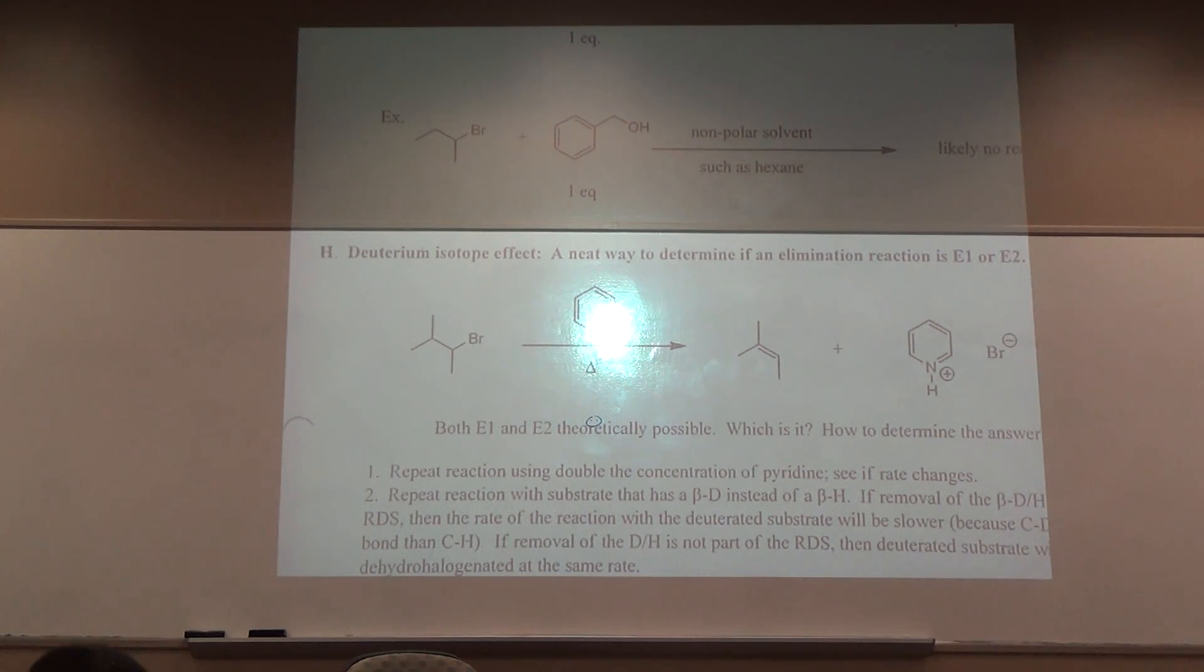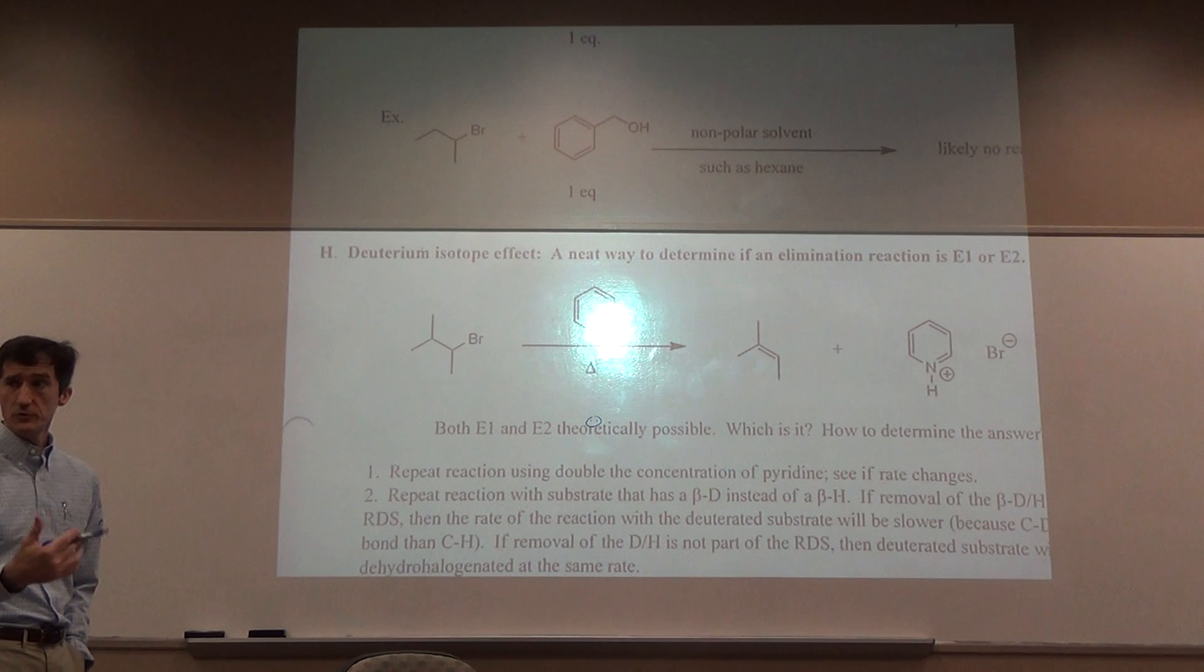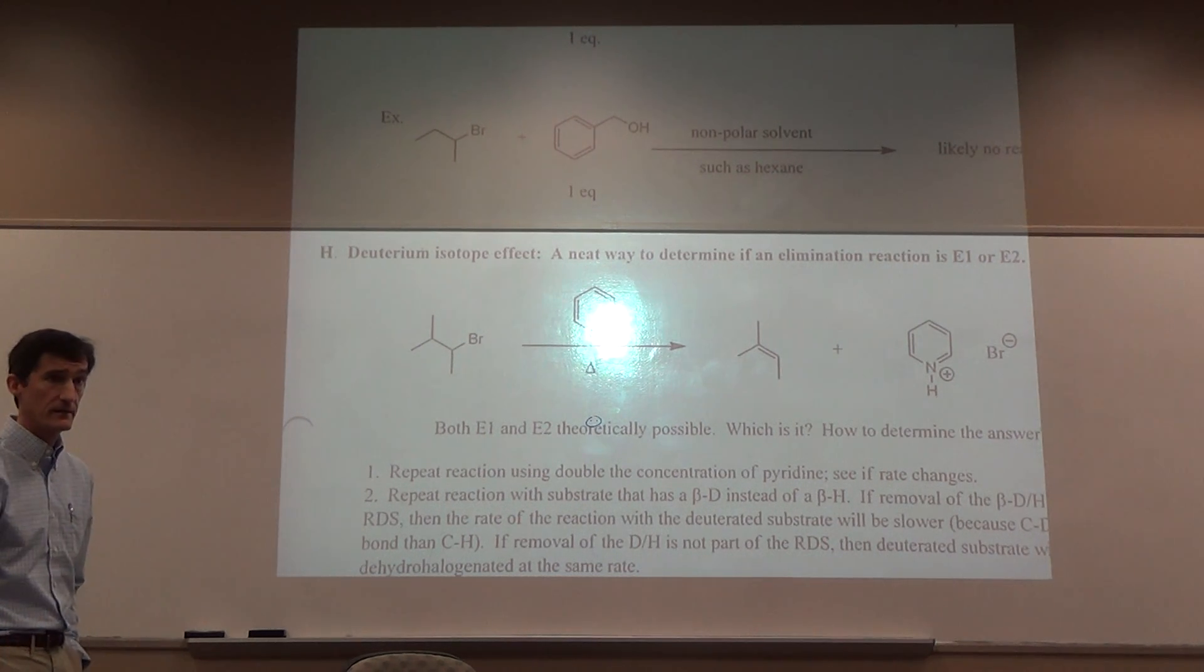But in the E2, it's all concerted. It's actually only one step. The beta hydrogen is abstracted in the rate determining step of the E2, but not in the E1. We can make use of that. Because if we convert the beta hydrogen into a deuterium, which is just an isotope of hydrogen with one neutron, that's a mass number of 2. It turns out that a carbon-deuterium bond is stronger than a carbon-hydrogen bond. And since the bond is stronger, it's going to be more difficult to abstract. It's going to be more difficult to break that bond.